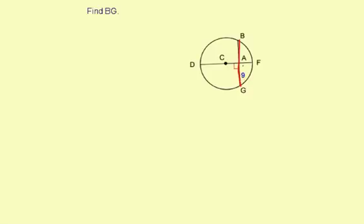We have a 9 for the measure of AG, which means we have a 9 for the measure of AB as well. So the total measure is 9 plus 9, which is 18. Therefore, BG is 18.